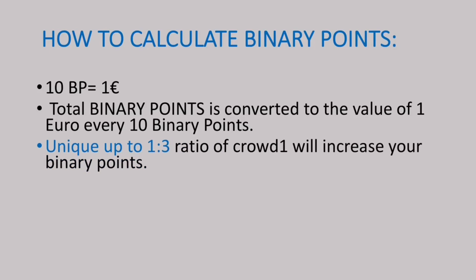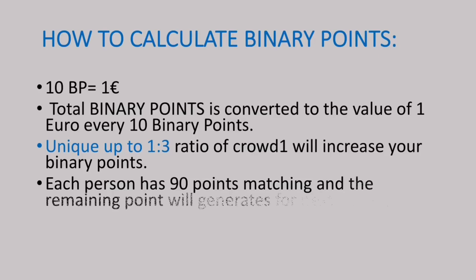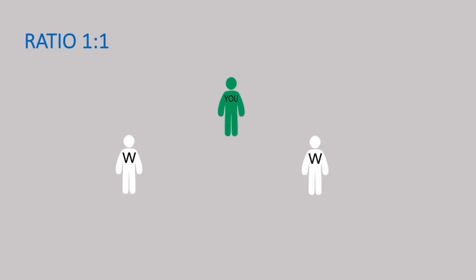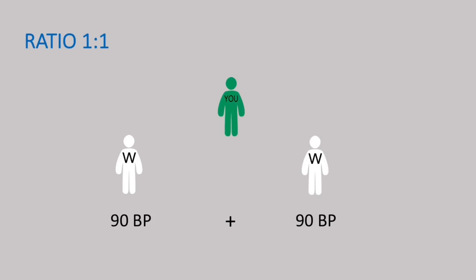The unique 1 to 3 ratio of Crowd1 will increase your binary points. Each person has 90 points matching and the remaining points will generate for the next pairing. Here is the 1 to 1 ratio. This is you — you invited one white package on your left and another white package on your right, giving 90 binary points each, for a sum of 180 binary points.